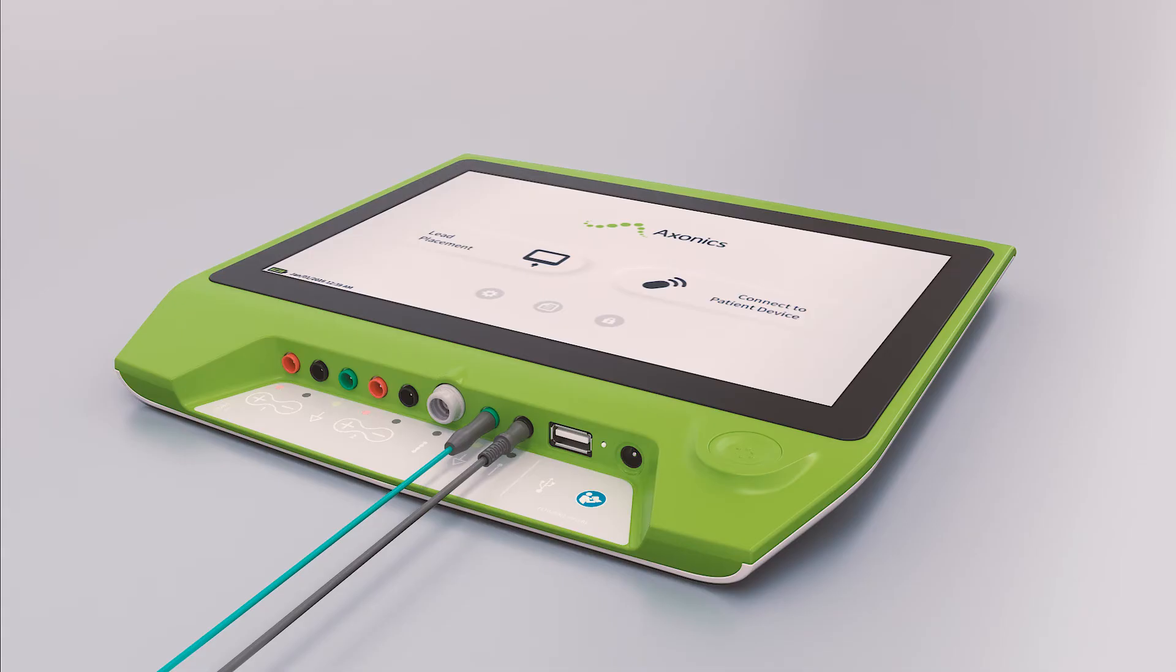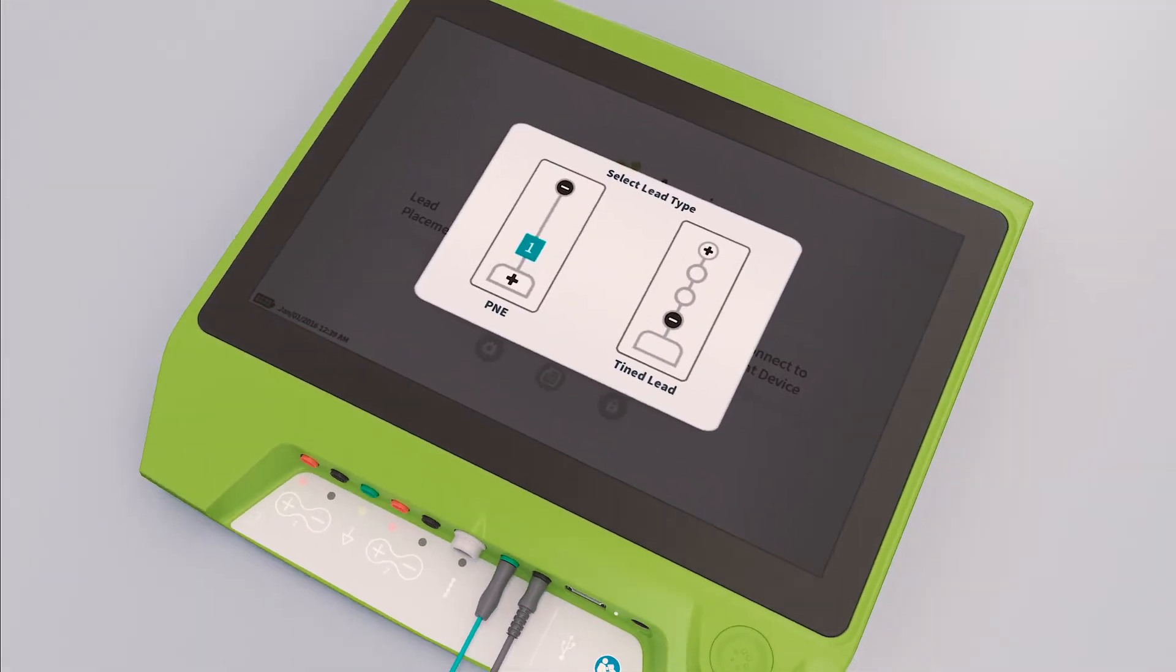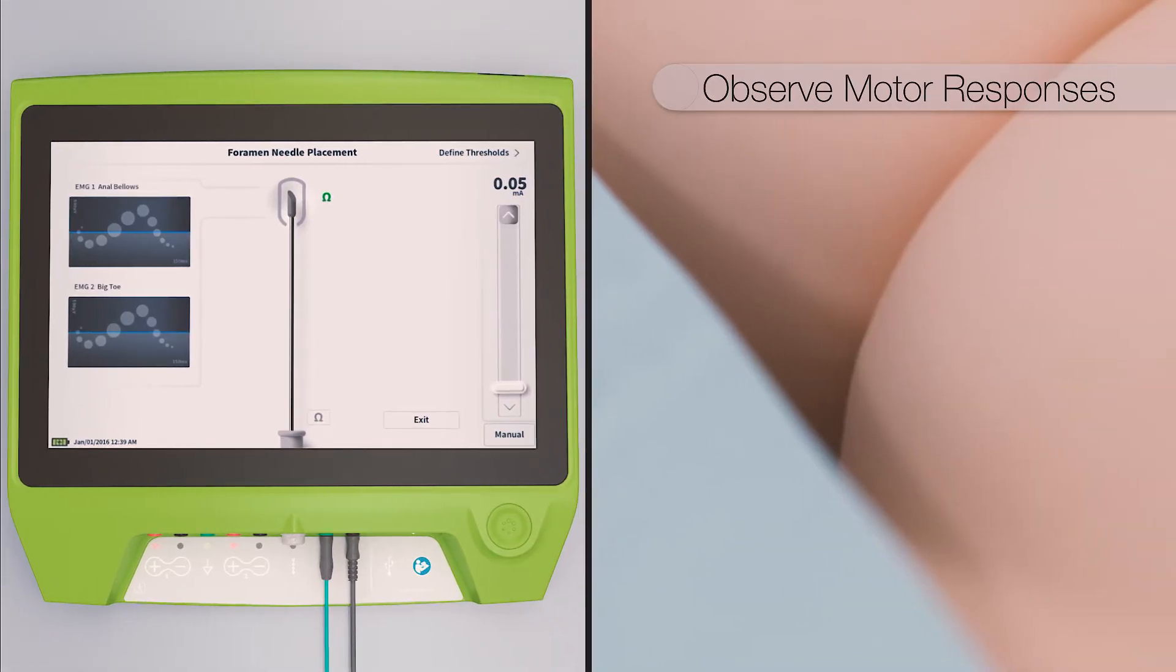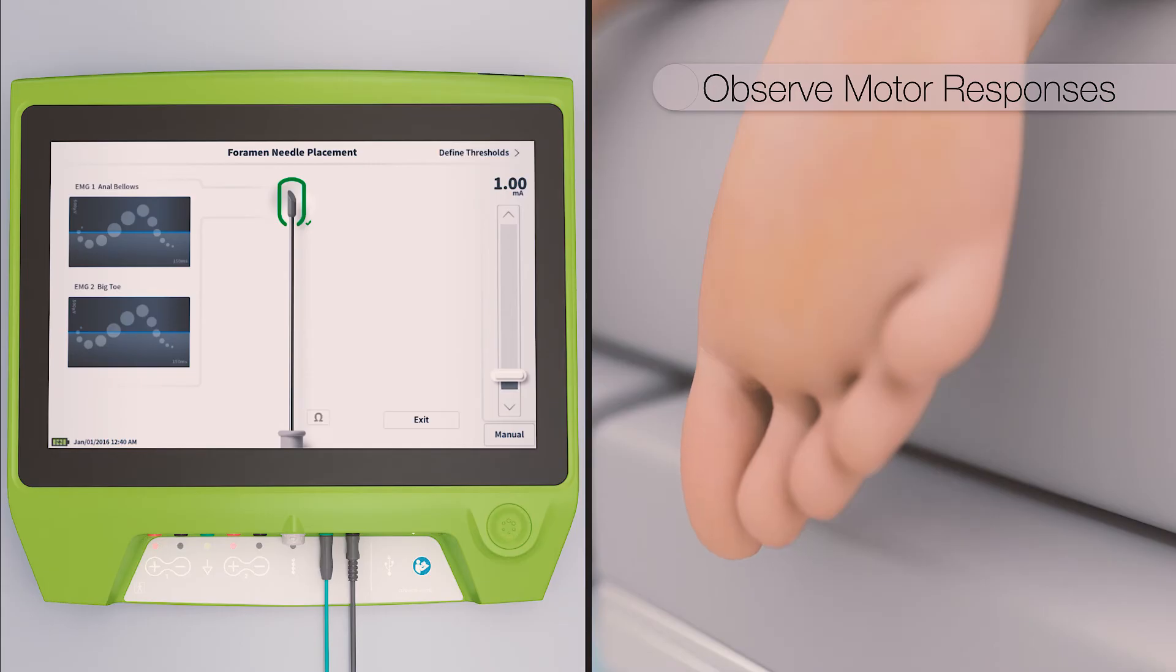The clinician programmer is used to provide stimulation to test for patients motor responses. The ideal motor response is a pulling in of the pelvic floor muscles also referred to as a bellows response at an amplitude below 2 milliamps with toe flexion occurring at higher amplitudes.